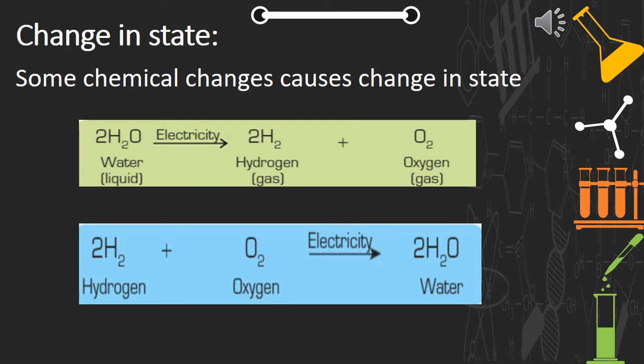The third characteristic of chemical reaction is change in state. Many chemical reactions involve a change in state. The first example is when electricity is passed through water — water is in liquid state — it gives hydrogen gas and oxygen gas. The liquid gets converted to gas, which is a chemical reaction, and here you can observe the state change.